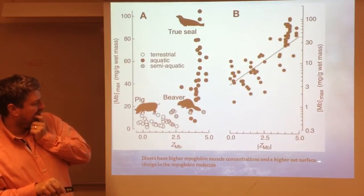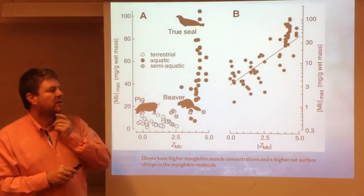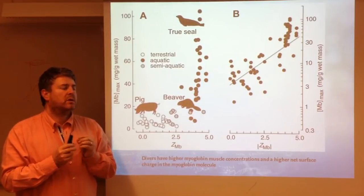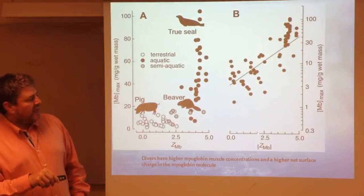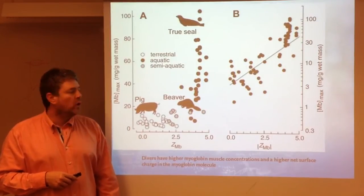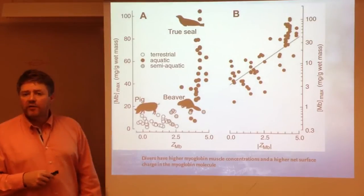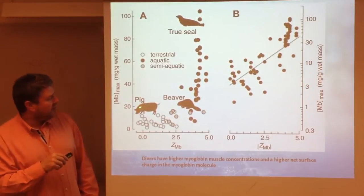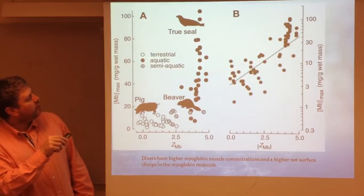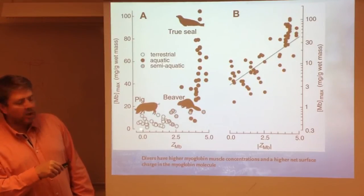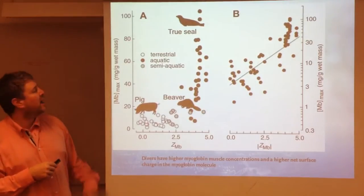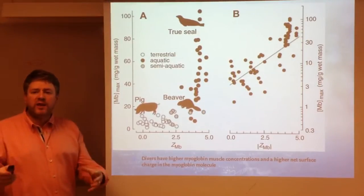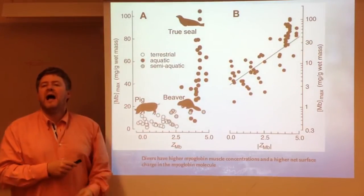Why is this relevant? For a diving animal that wants to have more myoglobin in the tissue, one potential solution is to increase the net surface charge — increase the charge, and you can pack more myoglobin into the tissue. Divers have both higher myoglobin concentration in the muscle and a higher net surface charge in the myoglobin molecule. Looking across different animals — pigs, bears, many species — terrestrial animals have a low charge and low myoglobin concentration. Semi-aquatic animals are in the middle. Aquatic animals like seals have a high net surface charge and high myoglobin concentration.